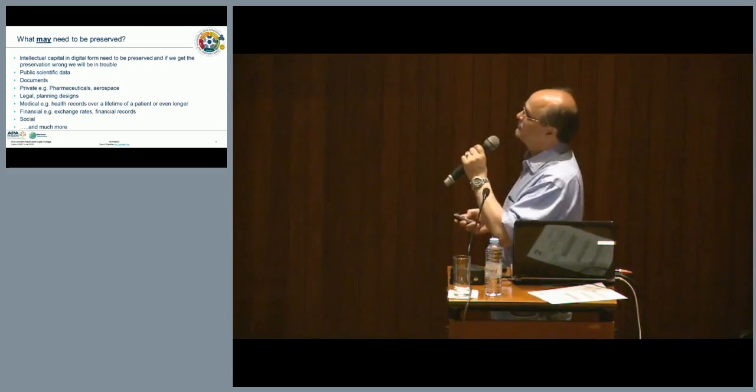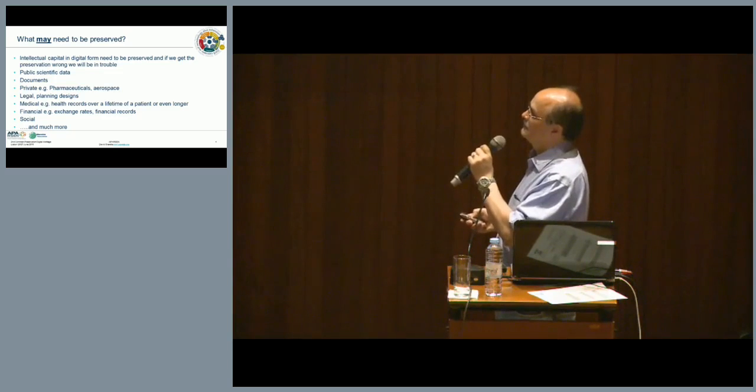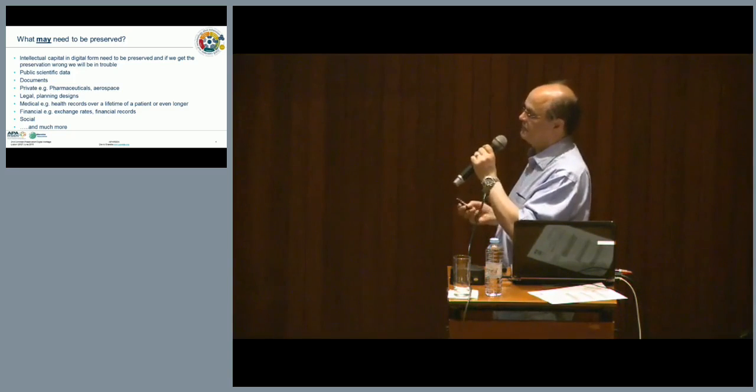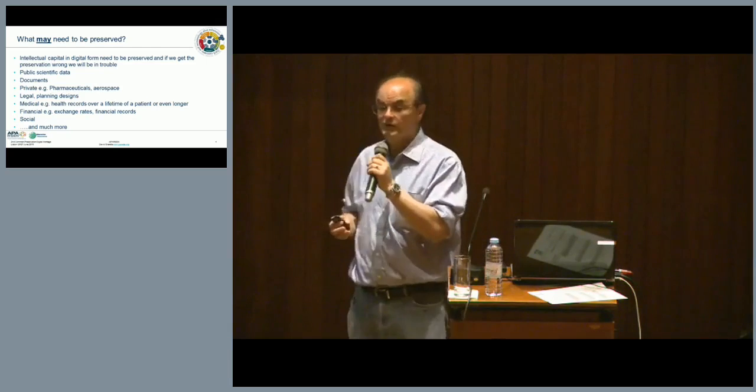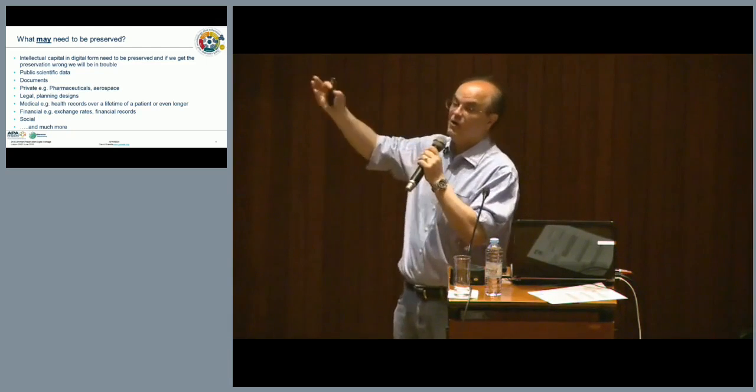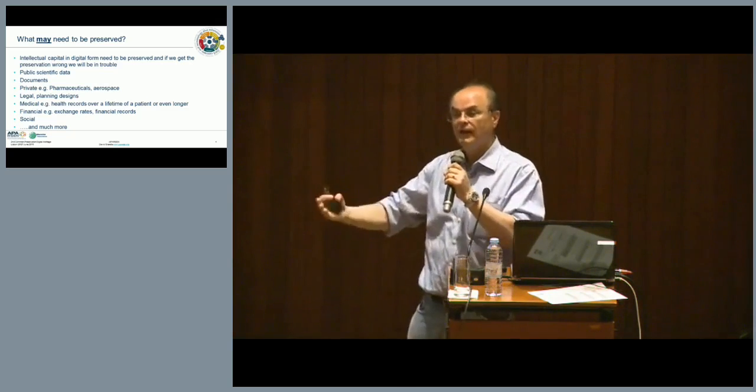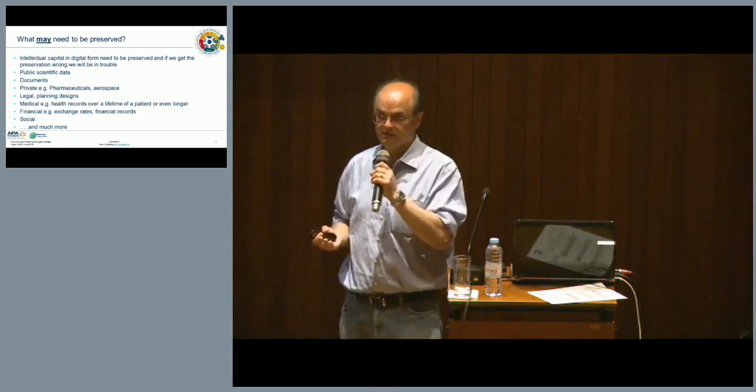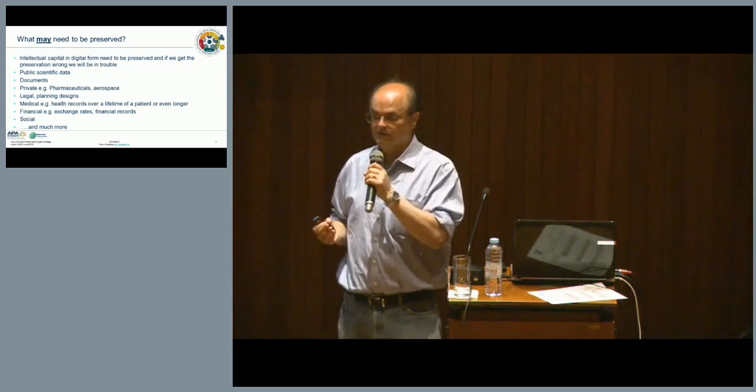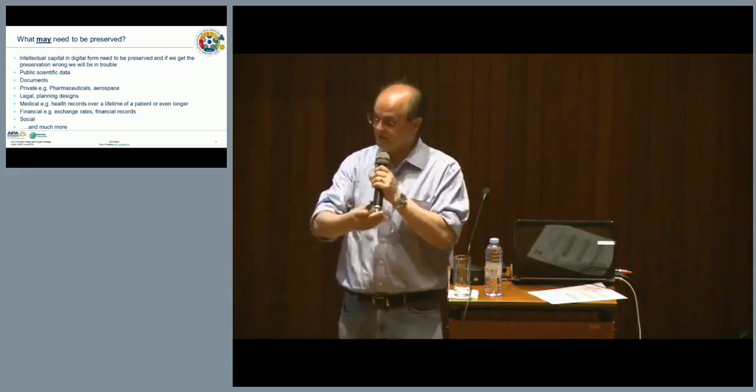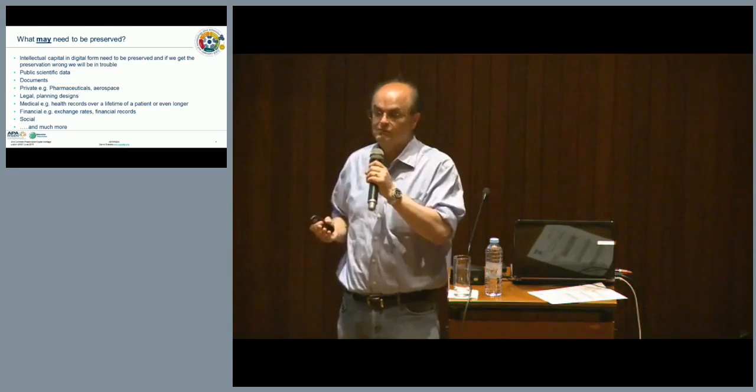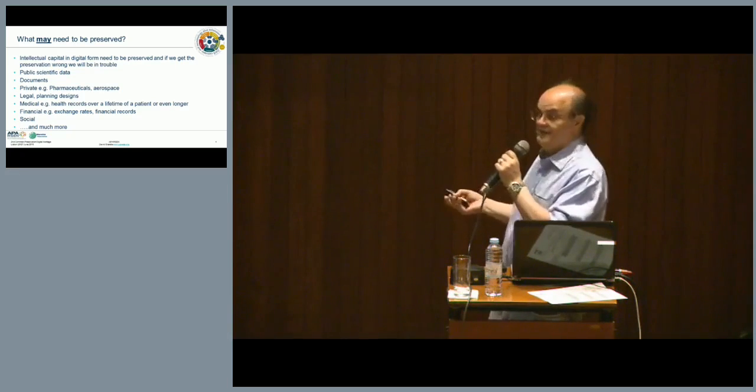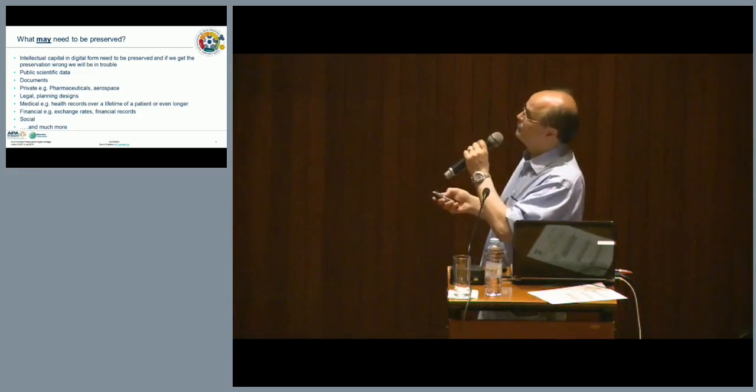And the hope was that if we could map out the domain of digital preservation, then we could identify which tools worked where. But equally, we could identify areas where there was nothing. There had been no research done. There was a gap in our knowledge and our capabilities. So, we needed a roadmap and we needed to bring together all of the different work that had been done. These are things that are our intellectual capital in digital form. They're important for us to keep.